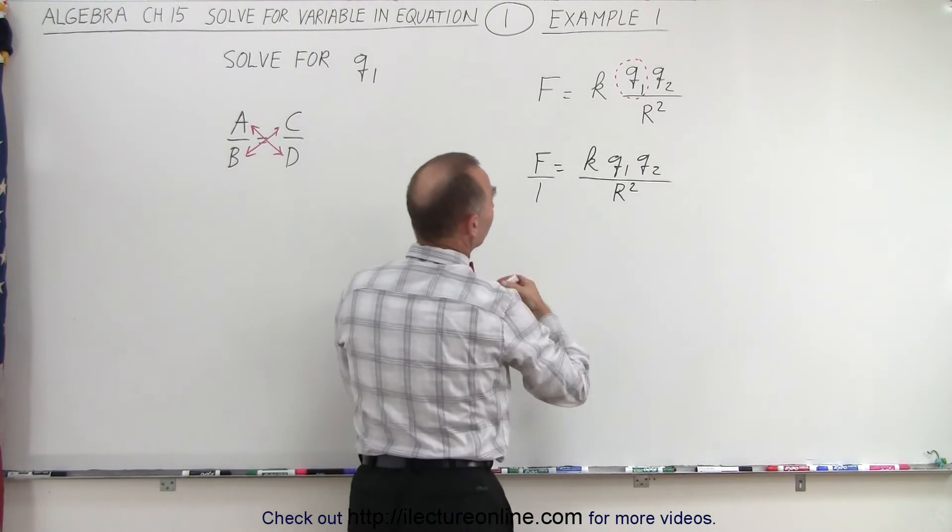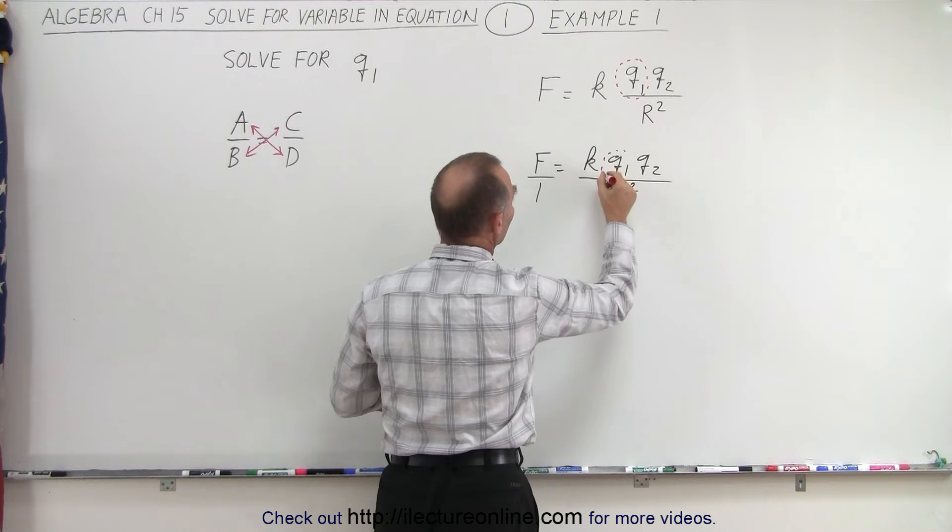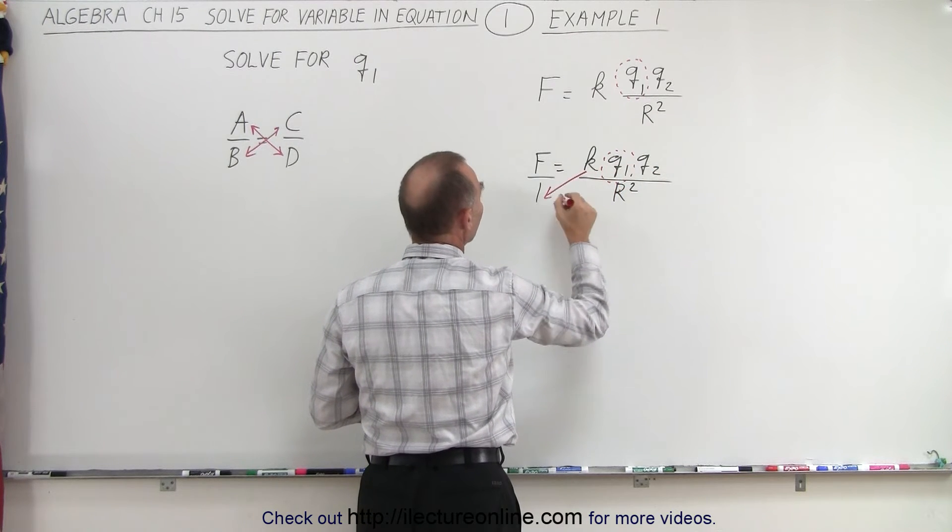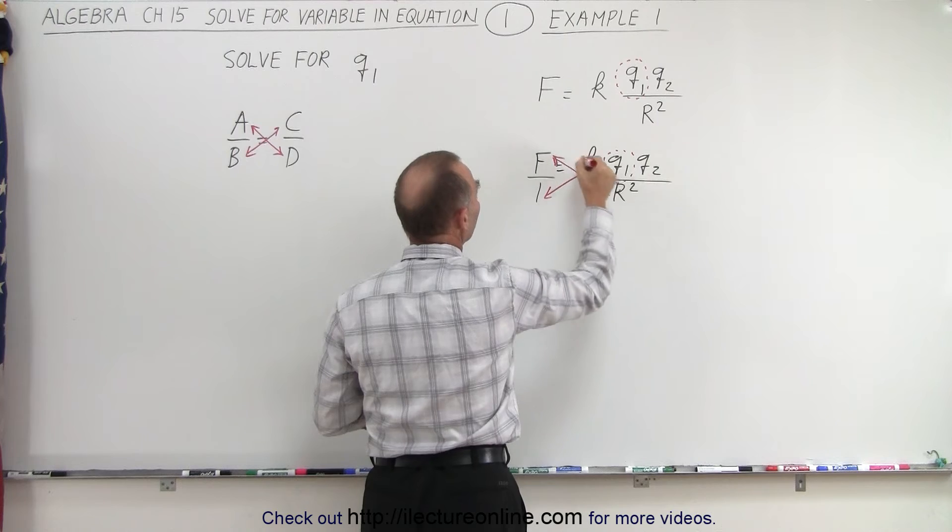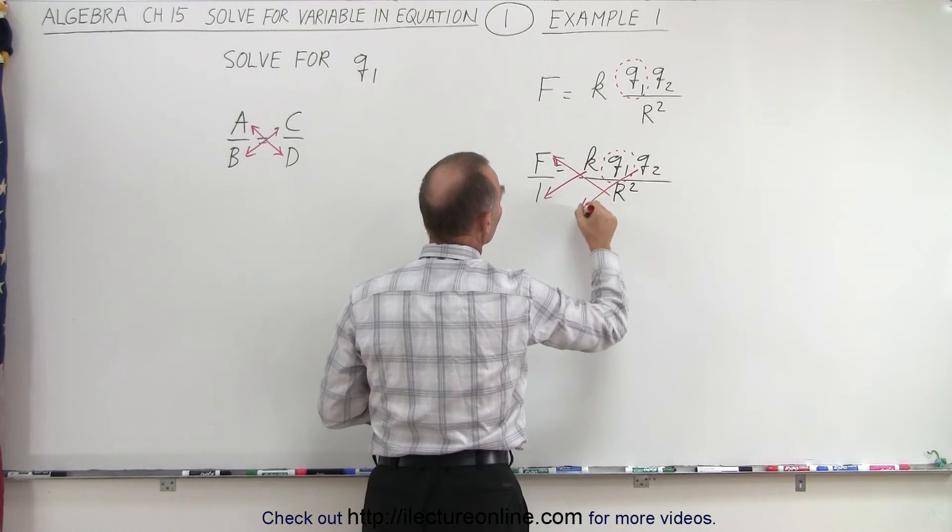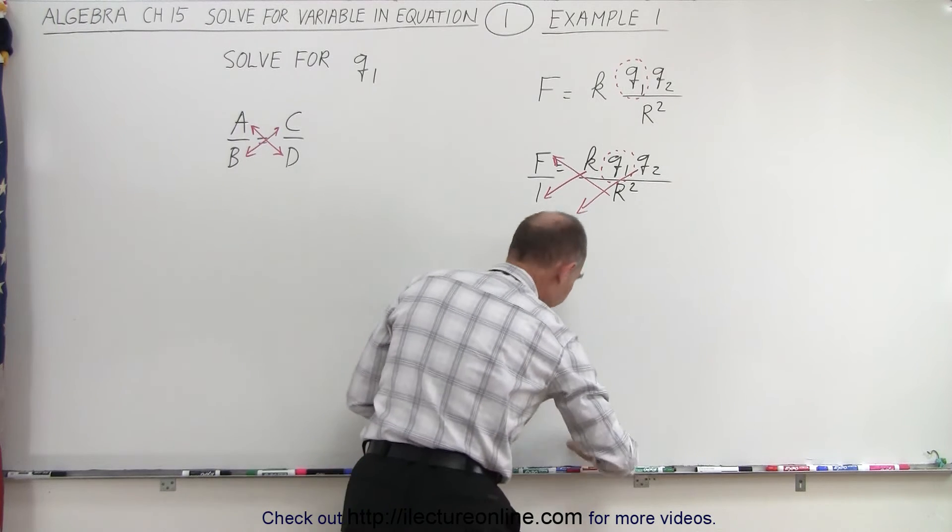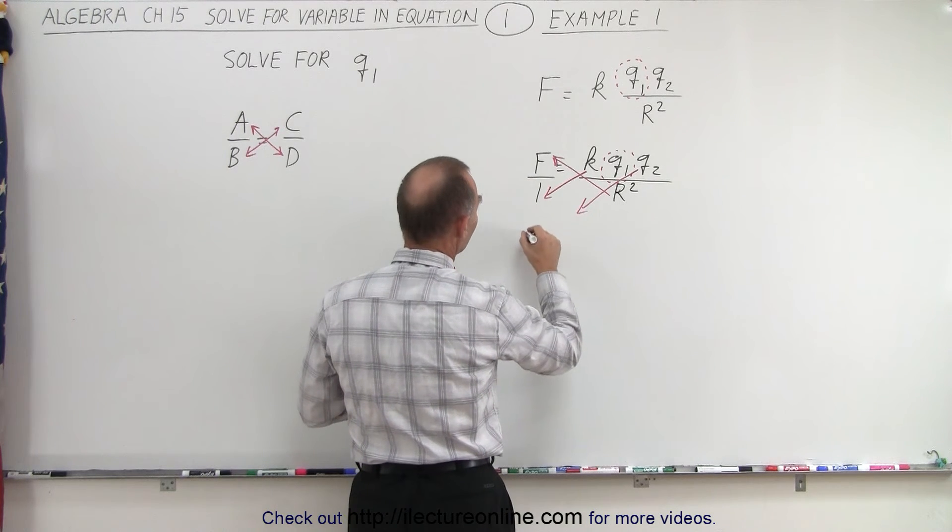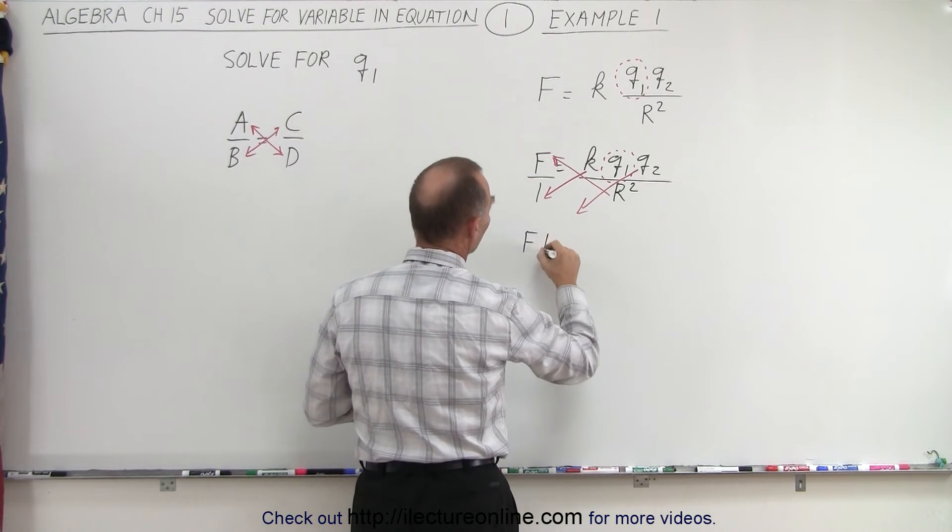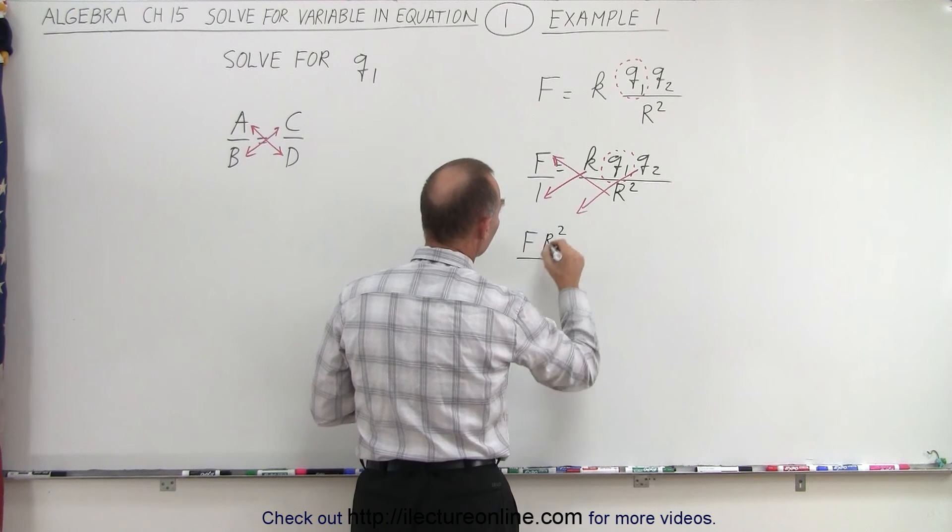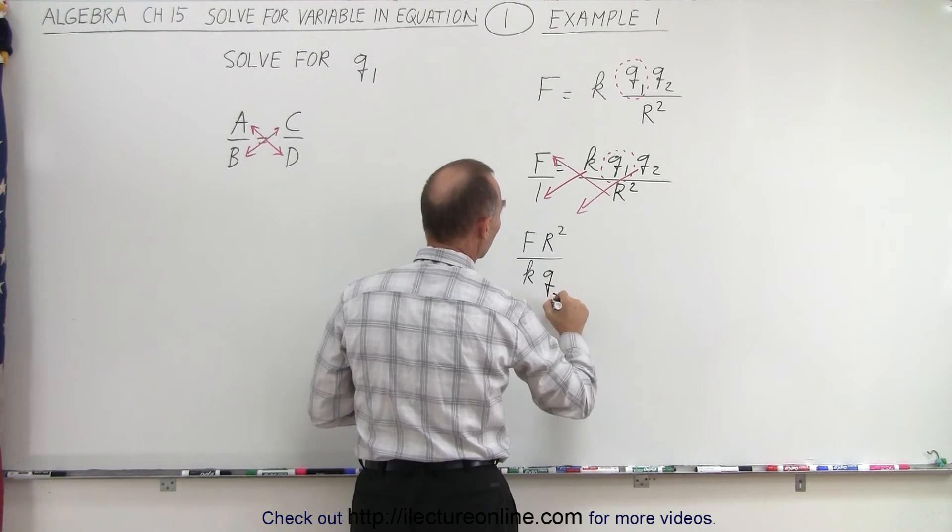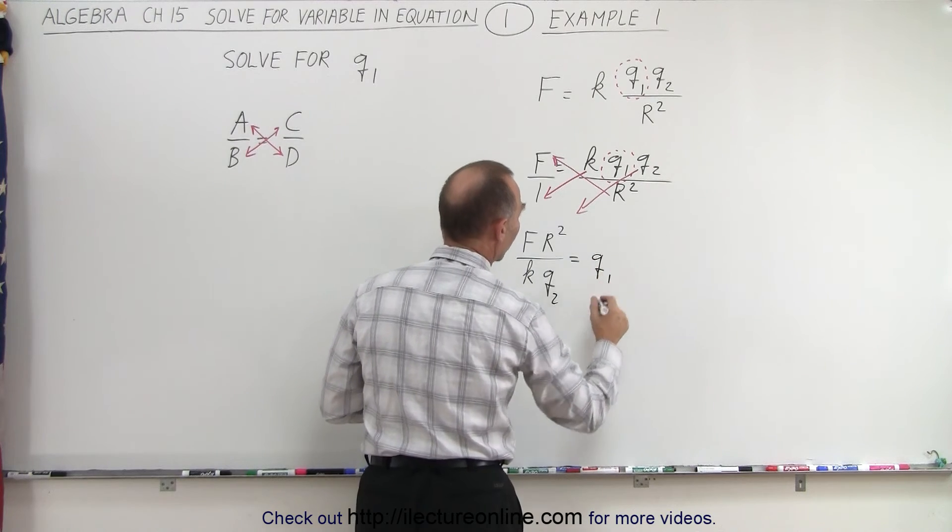In other words, since I'm solving for Q1 here, and again I'll draw a little circle around it, I'm going to move the K down here, the R squared up there, and the Q2 down here. And so if I do that, I get the following result. So here we have F times R squared divided by K times Q2, and that is equal to Q1.